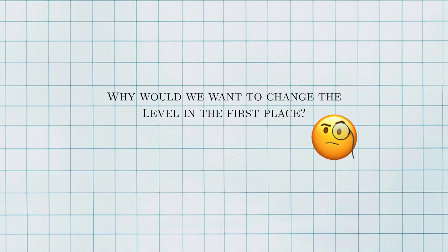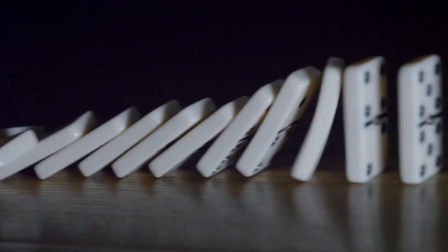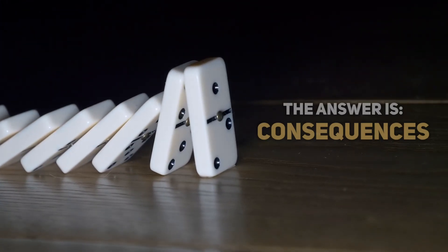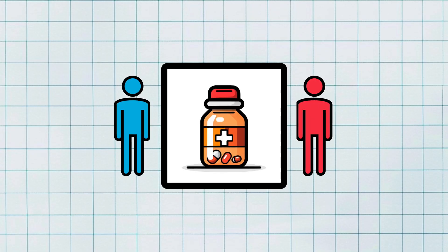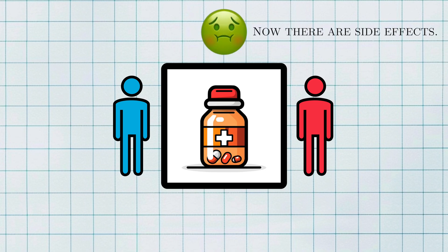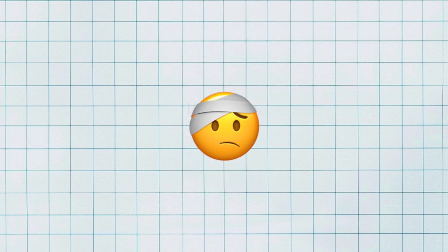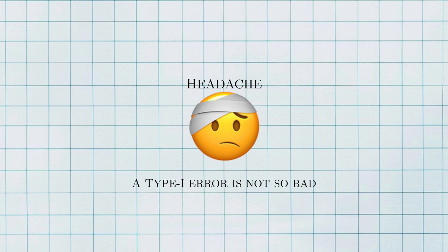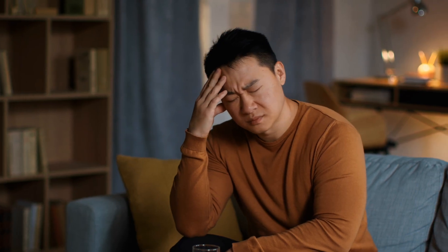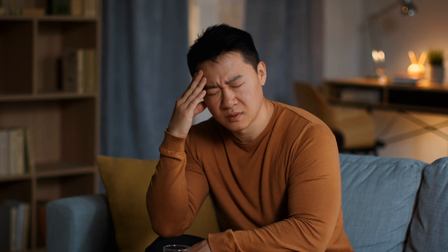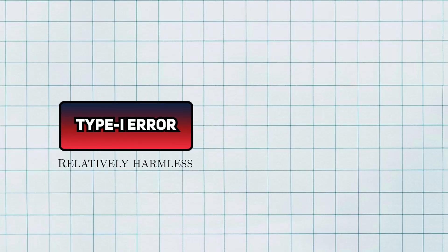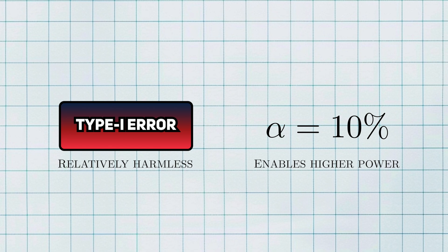You may wonder why we'd want to change the level in the first place. As with most things in life, the answer is consequences. Let's go back to the clinical trial example with an added wrinkle. Now let's say that treatment has side effects and whether or not the treatment is effective, these side effects will still happen. For a relatively benign side effect like a headache, a type 1 error is not that bad. Even if the treatment isn't effective, they won't be that inconvenienced in the end. If a type 1 error is relatively harmless, we might choose to set a higher level because it would let our hypothesis test have greater power.